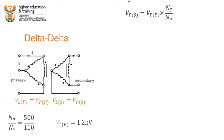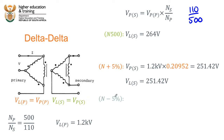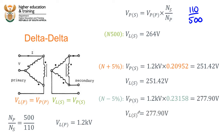For delta-delta with tappings: at the 500 V tapping we already know the line voltage is 264 V. At the plus 5% tapping, the turns ratio is 0.20952, giving a secondary phase voltage of 251.42 V — and since secondary is delta, line voltage is also 251.42 V. At the minus 5% tapping, using ratio 0.23158, we get 1.2 kV × 0.23158 = 277.90 V for both phase and line voltage on the secondary.